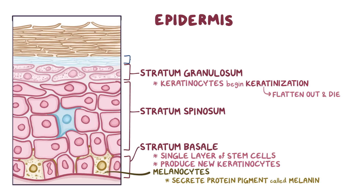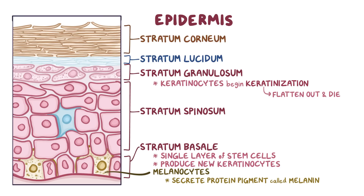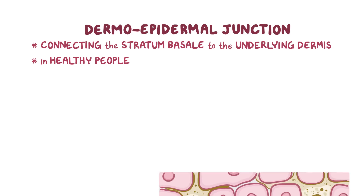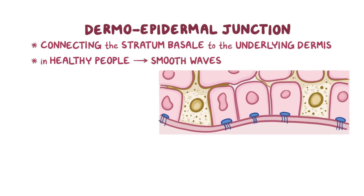Keratinization leads to development of the stratum lucidum layer, which is 2 to 3 cell layers thick of translucent, dead keratinocytes. Finally, there's the stratum corneum, the uppermost and thickest layer of the epidermis, which is like a wall of 20 to 30 layers, where the glycolipid acts like cement and the dead keratinized cells are the bricks. The part of the skin connecting the stratum basale of the epidermis to the underlying dermis is called the dermoepidermal junction. In healthy people, this junction looks like smooth waves between the epidermis and the dermis.